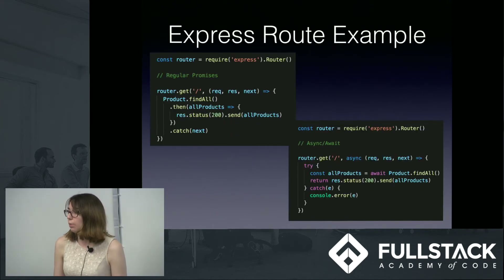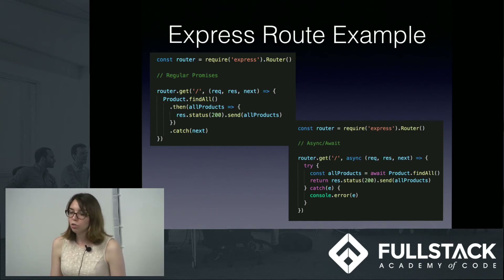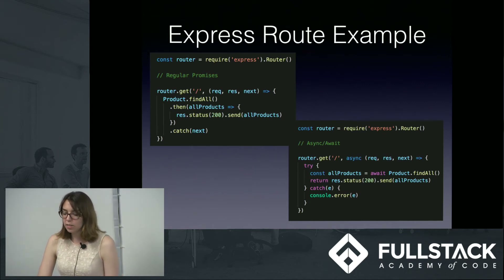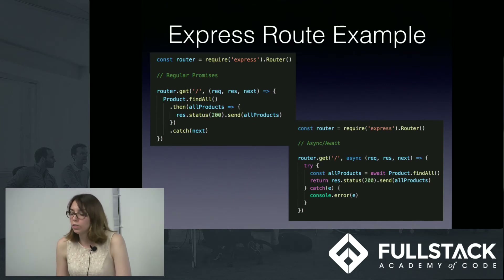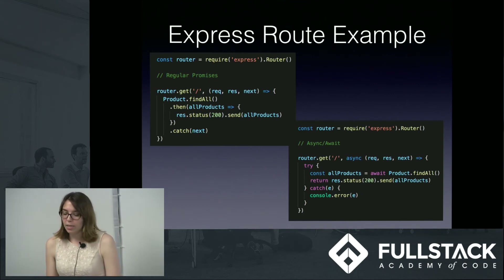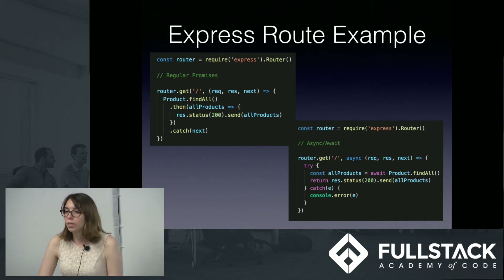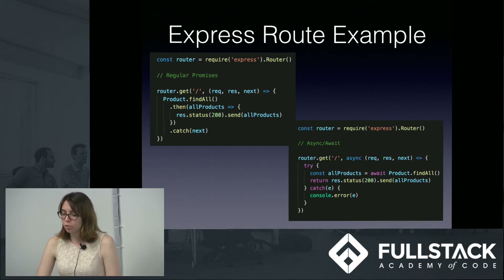Here we have an example using an Express route. In our promises example, we make a GET request to our products page which makes a call to our database using product.findAll. To access the promise this call returns, we have to dot-then off of it and res.send our resolved promise from inside the dot-then callback. But in our async/await example, we can make our code look and act more synchronous by using the await keyword to hold our call to product.findAll and put it in a variable. Then we can make other calls or actions in between and still res.send our allProducts variable later on.